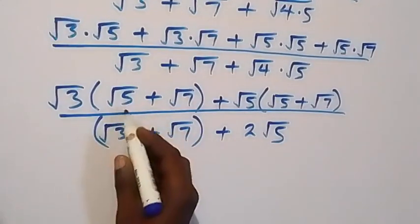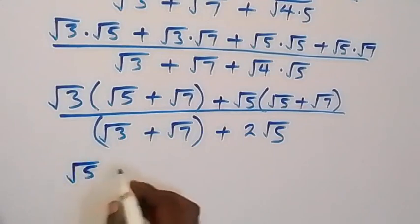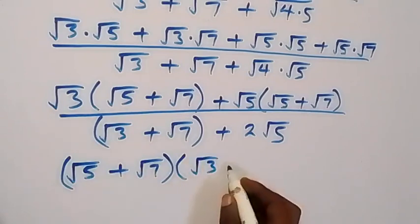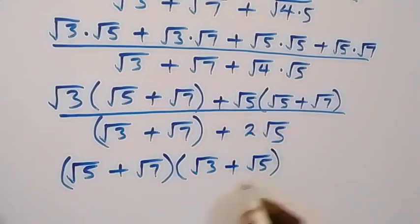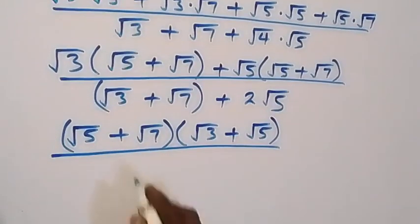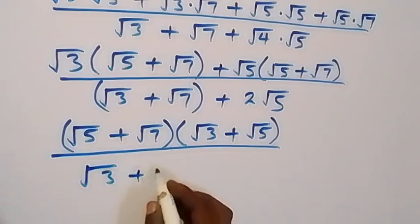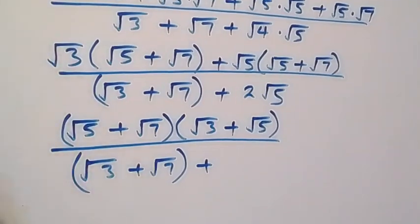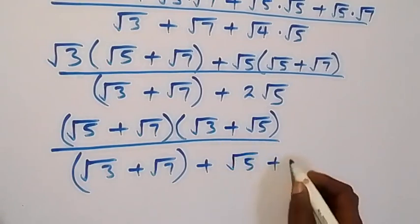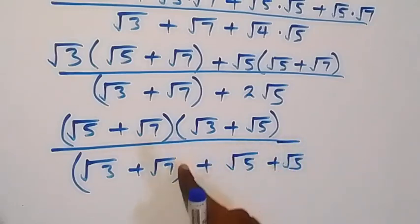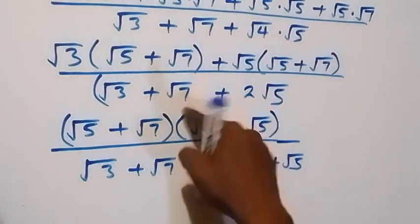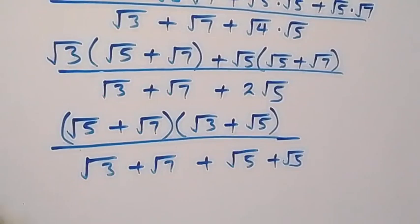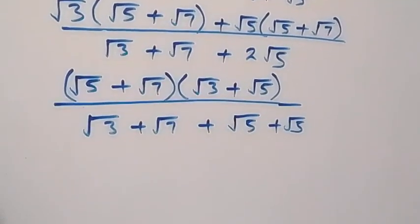Next we have root 5 plus root 7 common — I will factor that again. So we have root 5 plus root 7 out. Root 5 plus root 7, then what is root 5 plus root 5, then we have root 5 plus root 7, then plus what is left here we have root 5, same thing as root 5. So let's remove this bracket here, so that we can group root 3 and root 5 together.